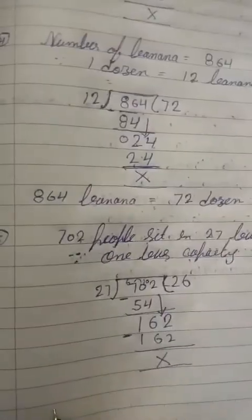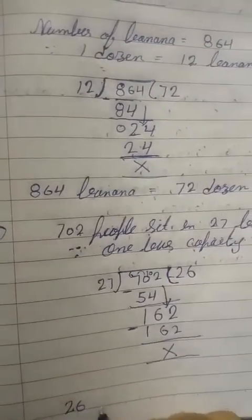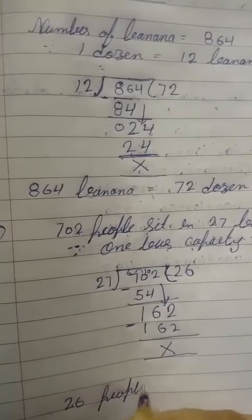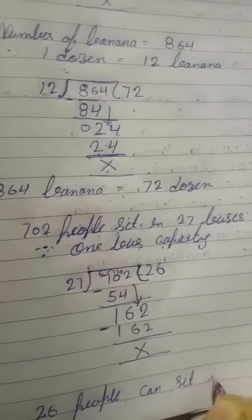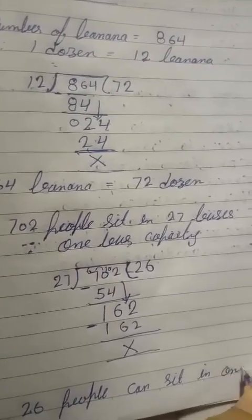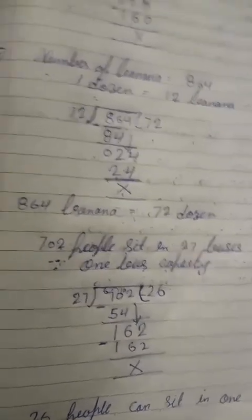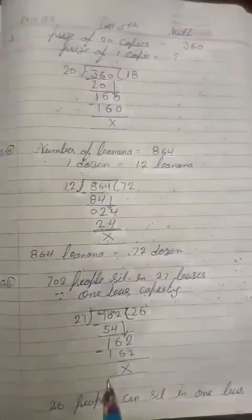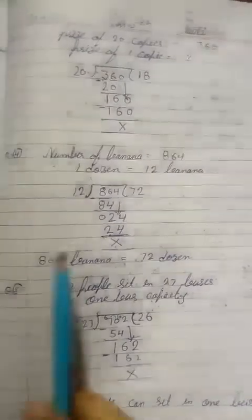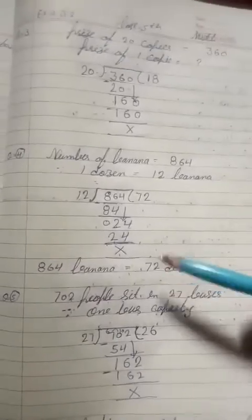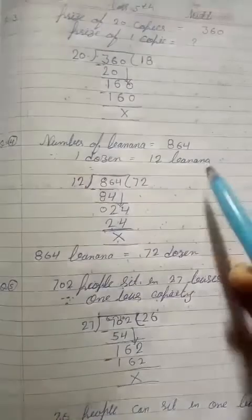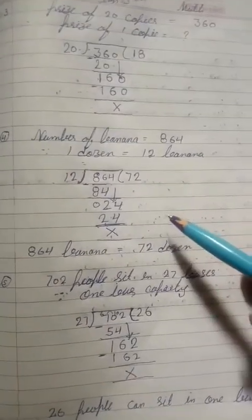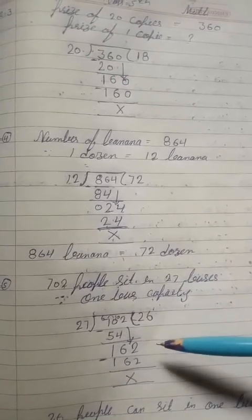So 26 people can sit in one bus. The answer is 26. Complete question 5. Questions 3, 4, and 5, note down in your fair notebook. Question 3 answer is 18, question 4 answer is 72, and question 5 answer is 26.